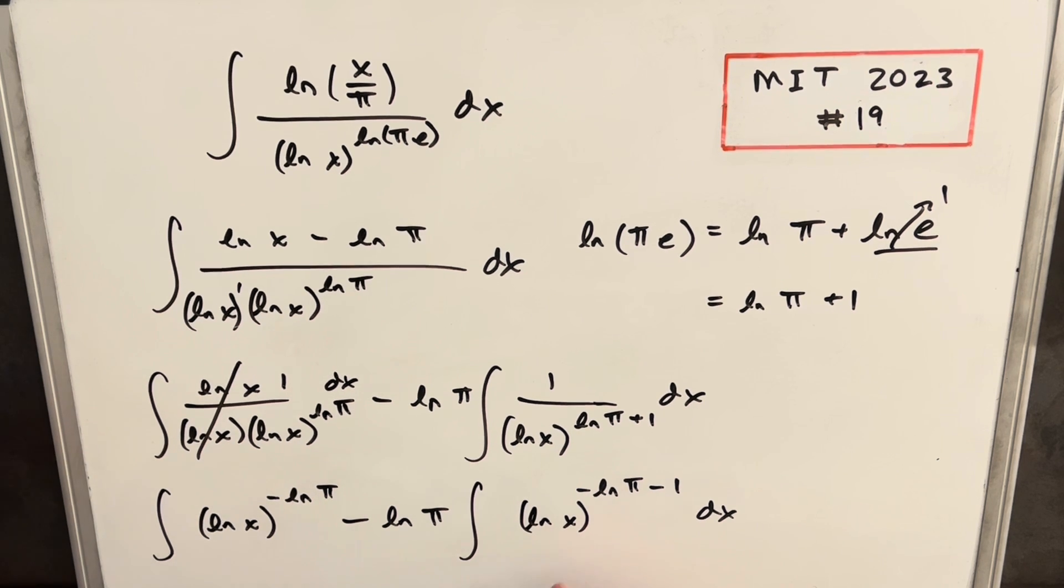So these integrals still might look kind of hard, but keep in mind, ln π is just a number. And so this is not very different from if we had ln x all squared or cubed. And I think we've done videos like that in the past. So we can actually handle that with integration by parts. So I'm going to do that, and I'm just going to clean up the board, and we'll go from there.